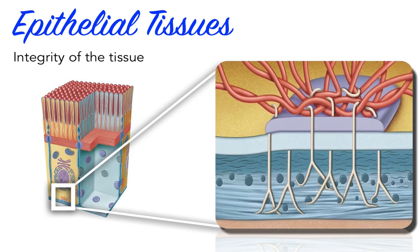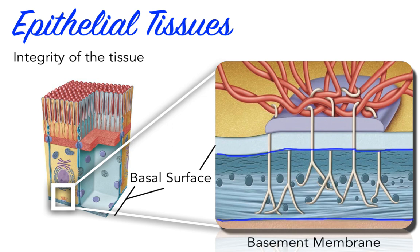Hemidesmosomes resemble spot desmosomes in that the same proteins are involved, but they reach out from the basal surface of an epithelial cell. Because the basal surface connects to the basement membrane and not a neighboring cell, there is no partner to form a complete spot desmosome — there is really only half of a desmosome, anchored in the basal membrane of the epithelial cell, which reaches out and grabs onto components of the basement membrane inferior to the cell. We call these hemidesmosomes for that reason.